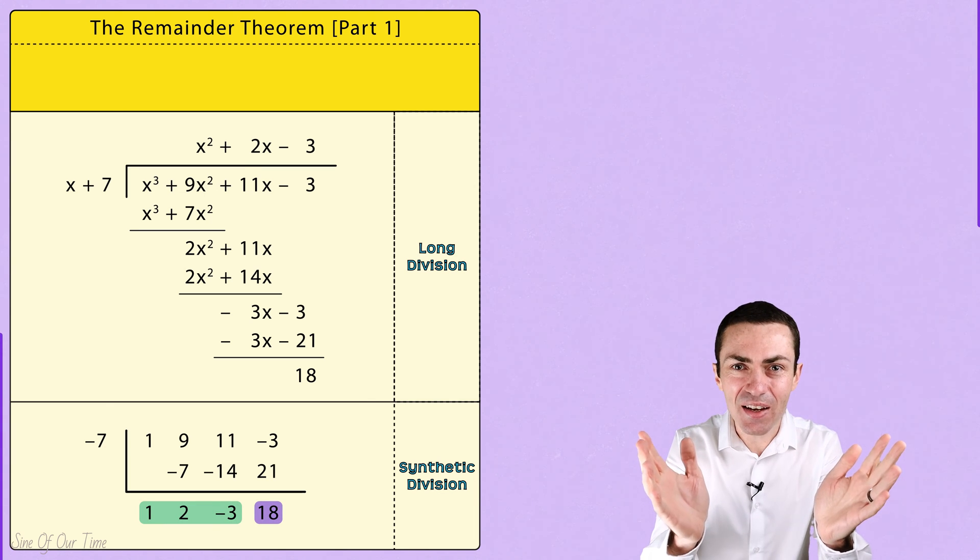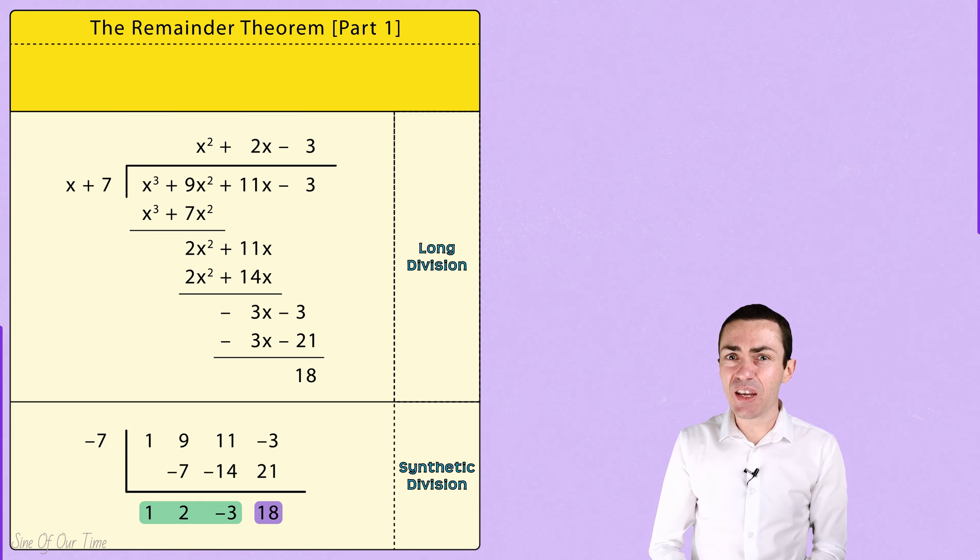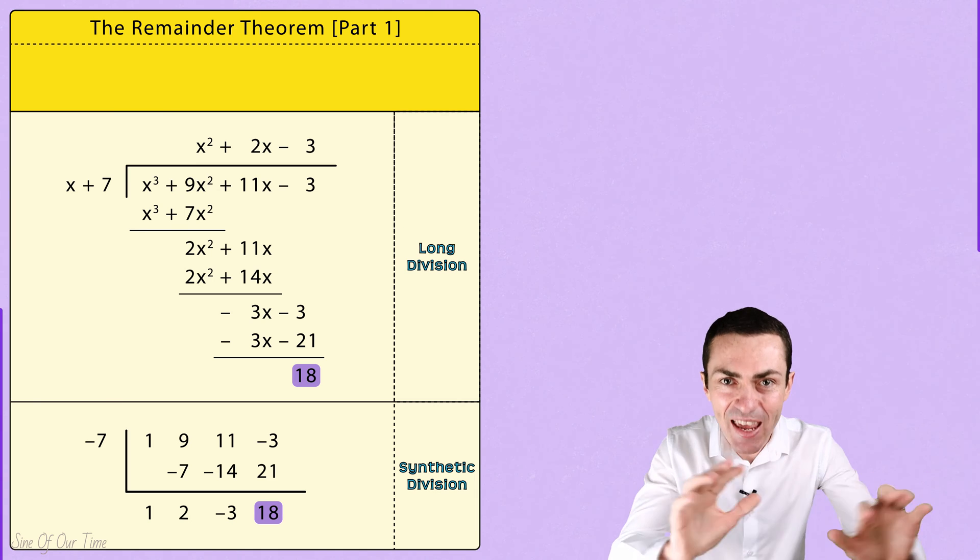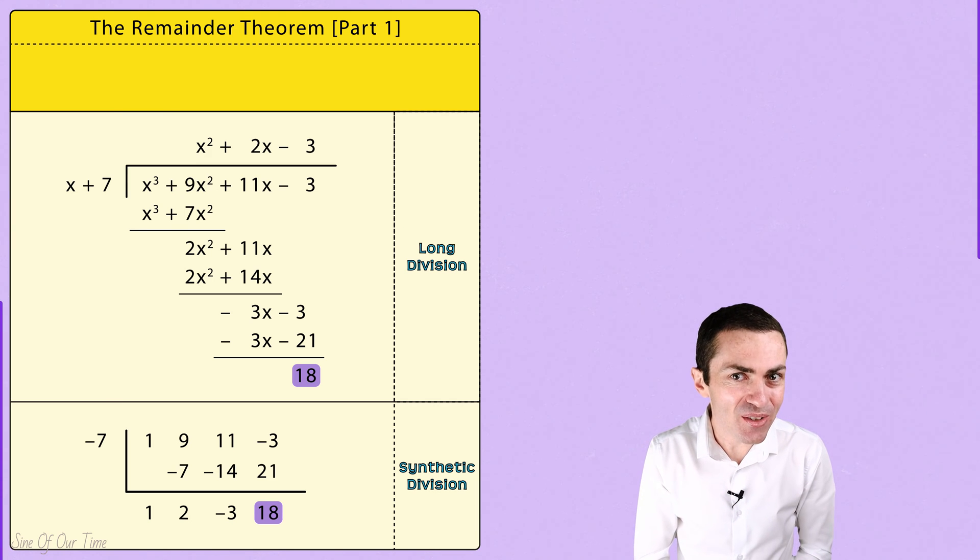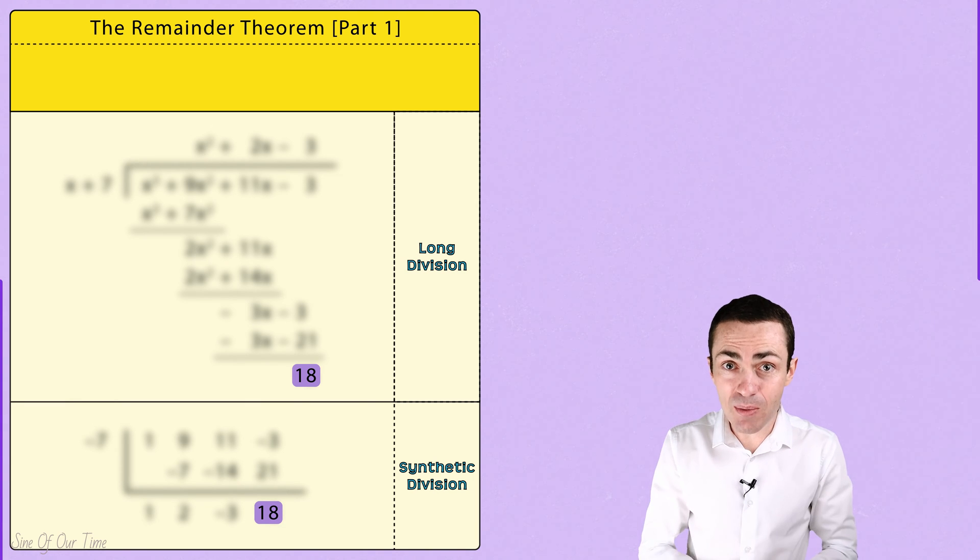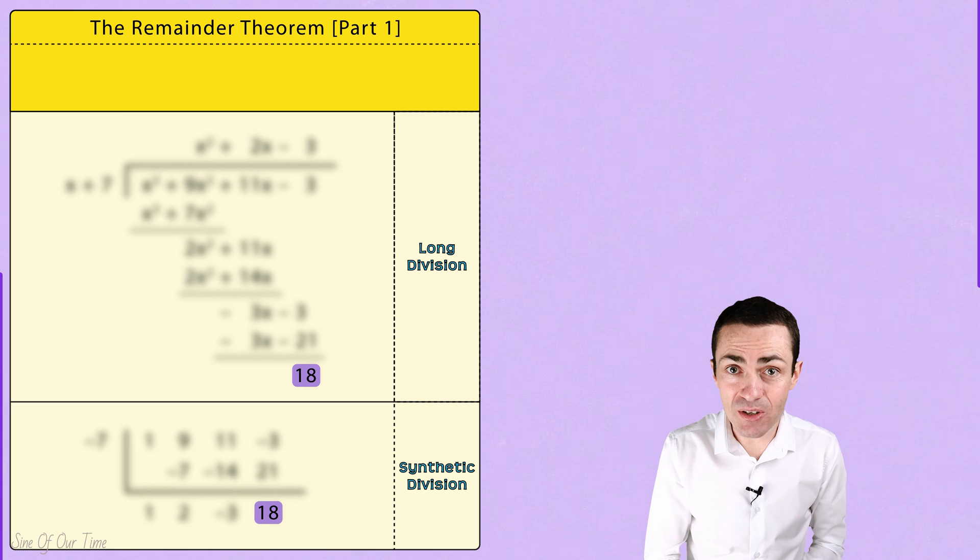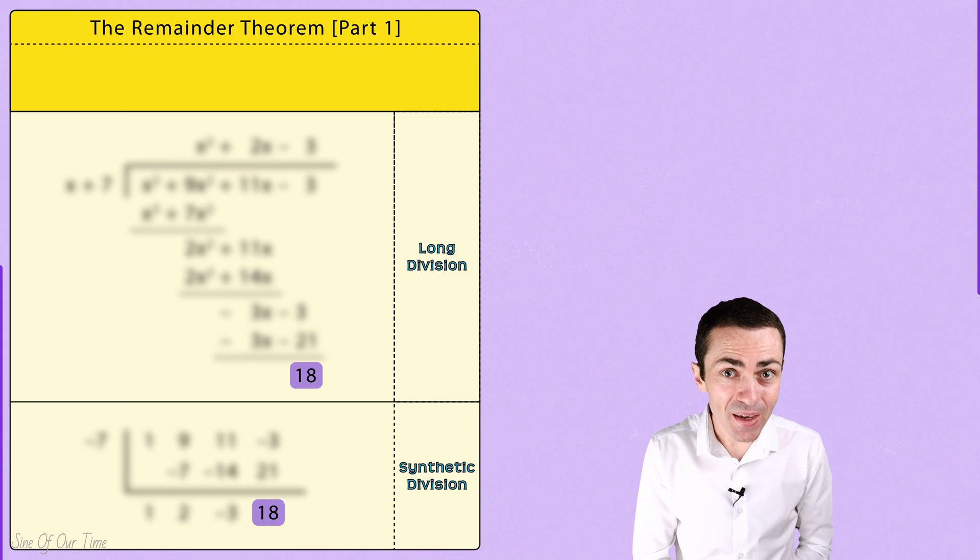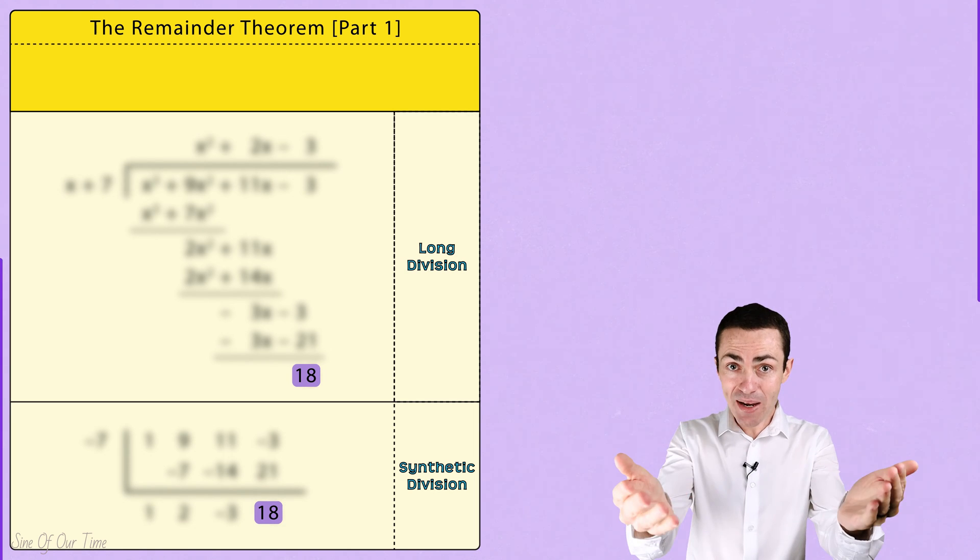But here's the thing, what if we were only interested in finding the remainder of a polynomial division and we didn't care about getting the quotient? Well, I have a third method that I want to show you which is the quickest of all three methods if we are only interested in finding the remainder. And that is by using the remainder theorem.